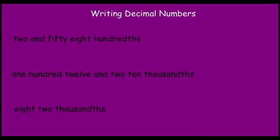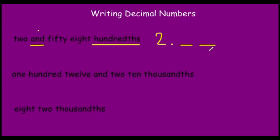Next you are going to learn how to write decimal numbers when you are given them in word form. Just a minute ago you learned how to write them in word form, but now you need to know how to do the opposite. If you are given a decimal number in words, such as "two and fifty-eight hundredths," you need to look and see where the "and" is — that represents the decimal point. So we have two, then a decimal point, and then fifty-eight hundredths. The eight is going to need to go in the hundredths place, so we have five tenths and eight hundredths. It is 2.58, or two and fifty-eight hundredths.